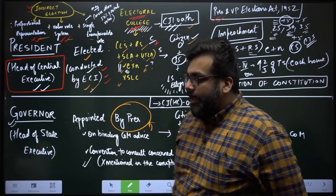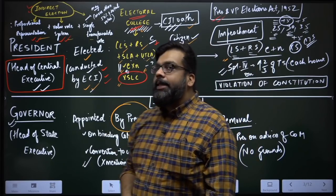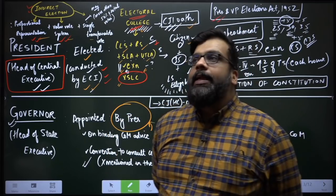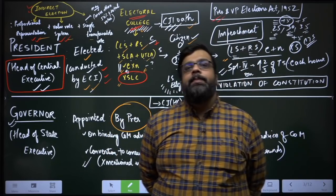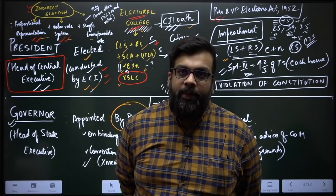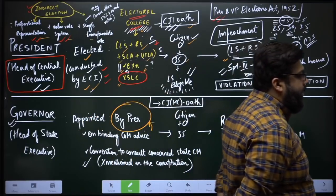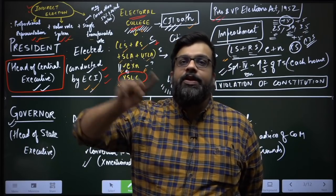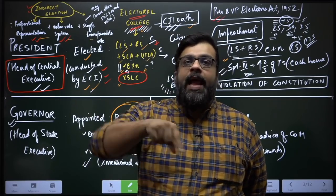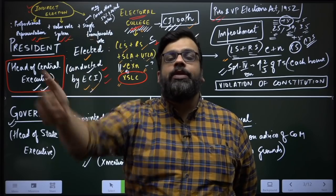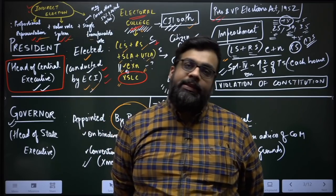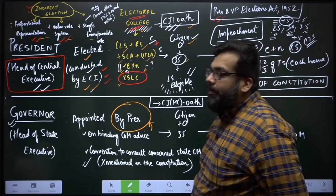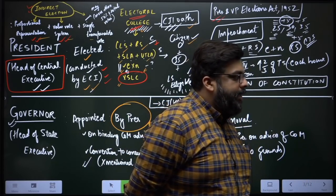State legislative councils — the second houses in select states — do not participate in presidential elections primarily because they are not uniform: not every state has one. If they participated, states with a legislative council would bring more votes simply by having two houses instead of one, which would be unfair. To maintain uniformity at the state level, legislative councils are excluded.